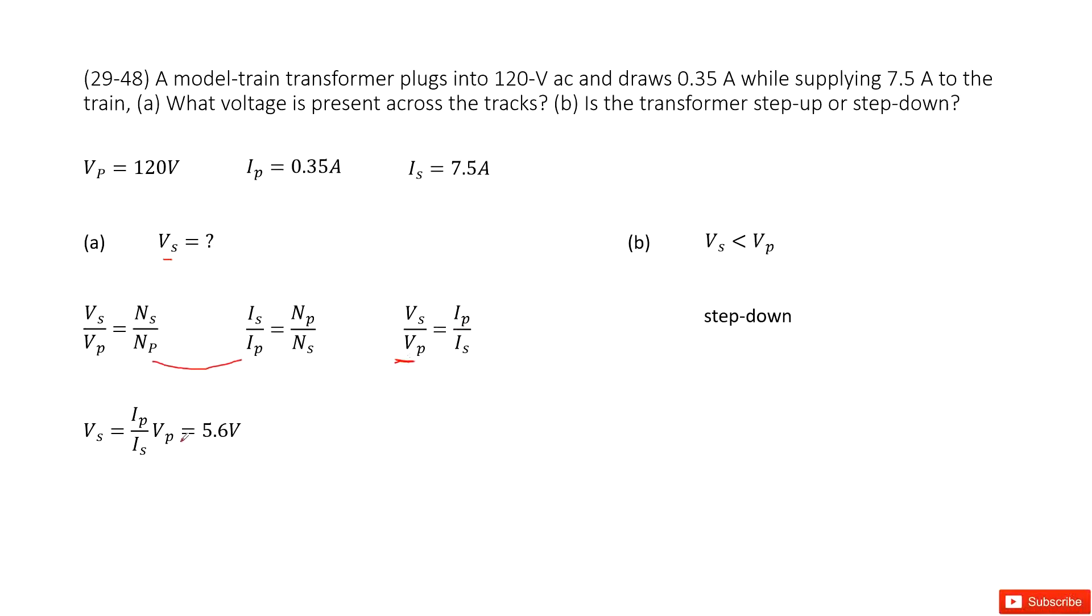In this equation, we can get the secondary voltage. We can see secondary voltage equals Ip over Is times Vp. Input the given quantities to get the answer, which is 5.6 volts.